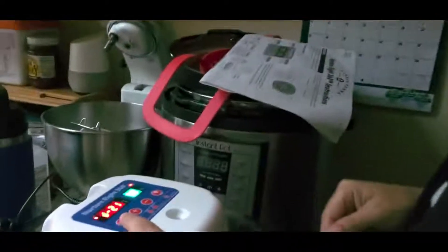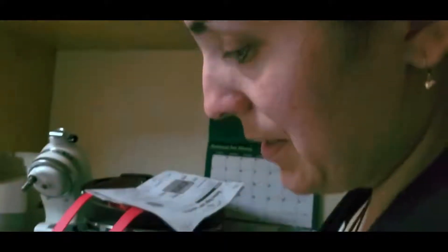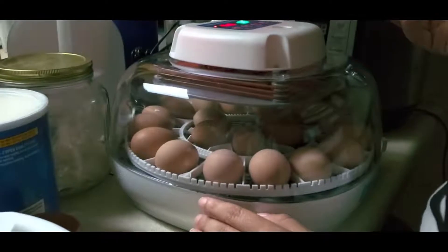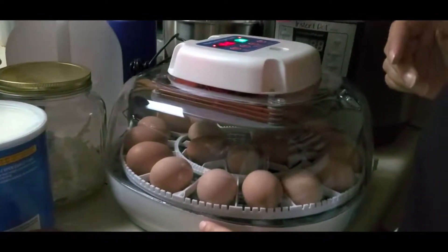So right now, as you can see, D21 is flashing, so it got reset to a 21 day hatching period which is what is indicated for chicken eggs. So now, it's just a matter of waiting for 21 days to see what happens with our chickens.